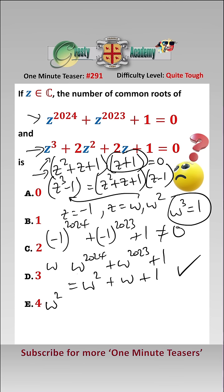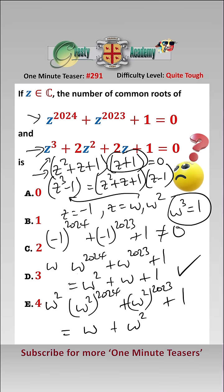Finally, putting omega squared in gives us omega squared to the 2024 plus omega squared to the 2023 plus 1, which equals omega squared plus 1, again using the fact that omega cubed is equal to 1, and that is also a common root. Therefore, the number of common roots is 2, answer C.